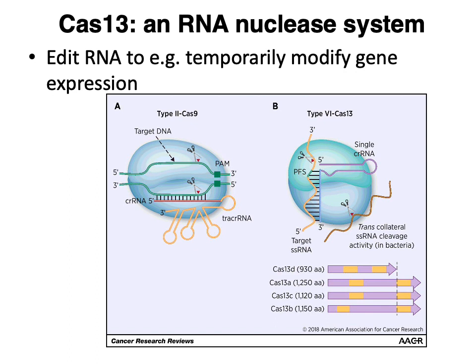It's also worth mentioning that some systems, like Cas13, are RNA nuclease systems that allow you to target and make edits to RNA rather than genomic DNA. One application of such systems is transiently modifying gene expression — for example, turning down gene expression in a transient way without needing to make permanent changes to the genome.